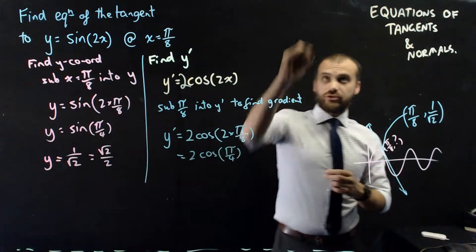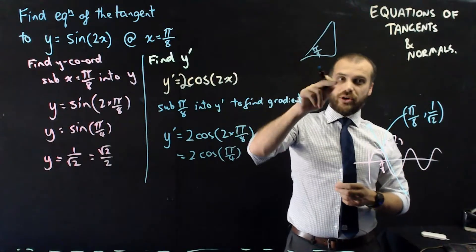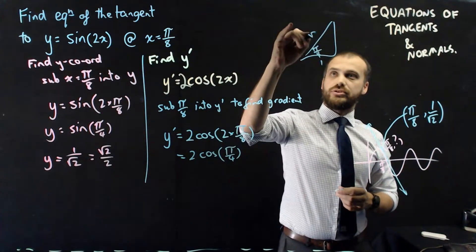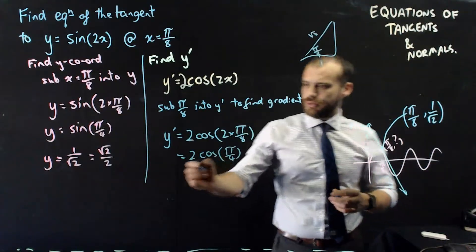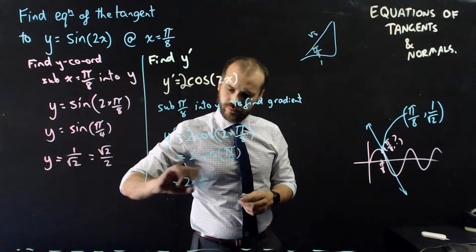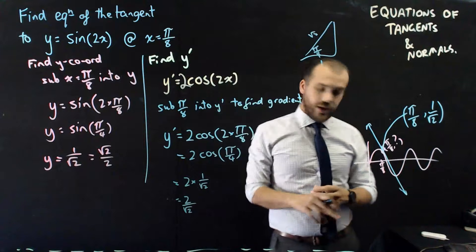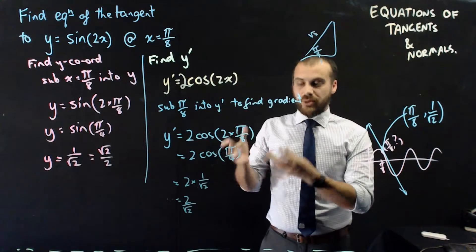So it's 2 times cos π on 4. Now again, you should be able to draw a standard triangle π on 4. Cos of π on 4 is adjacent over hypotenuse 1 on root 2. So it's 2 times 1 on root 2, which is 2 over root 2. That'll do me for now. That's my gradient.